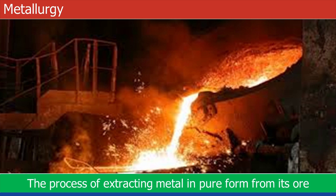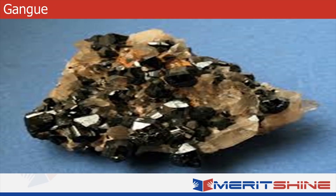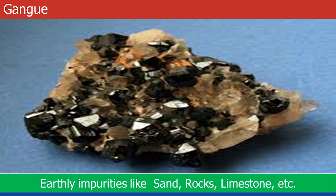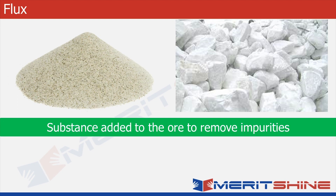The process of extracting metal in pure form from its ore is known as metallurgy. Let us familiarize ourselves with a few terms used in metallurgy. The first is gangue or matrix — the ores found in nature are generally associated with earthly impurities like sand, rock, and limestone; these are called gangue or matrix.